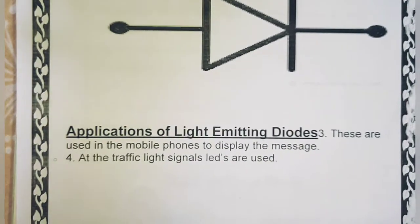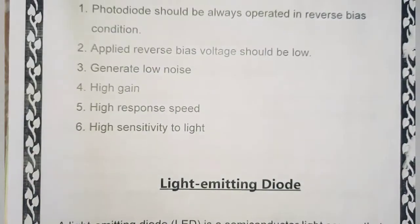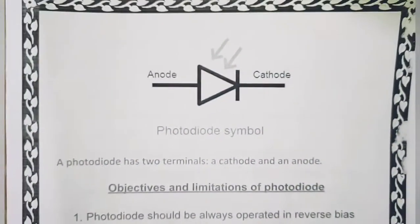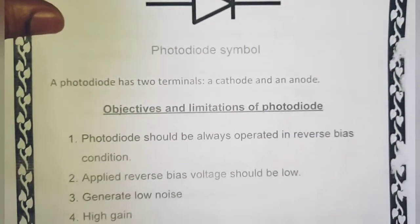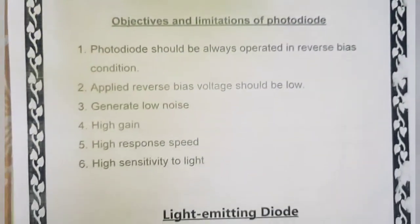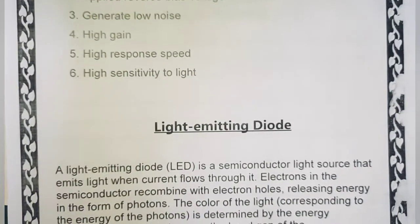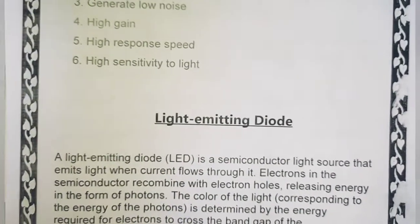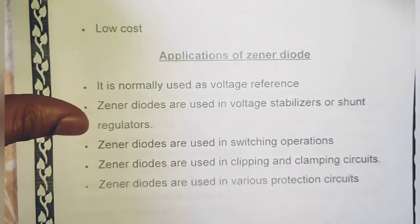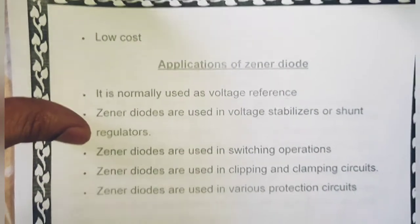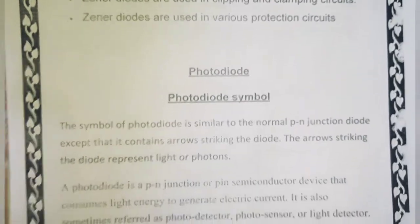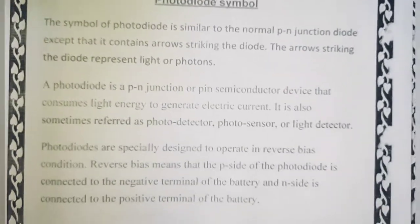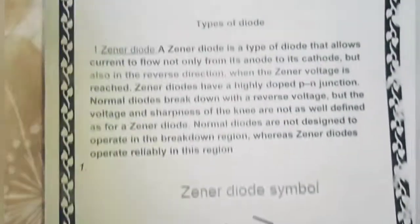LED कहाँ से आ गया? LED का symbol था। Next क्या है — photo diode symbol, objective, limitation of photo diode। LED यानी light emitting diode — इसकी बहुत सारी varieties हैं। Application of diode, photo diode symbol — यह मैं दिखाने की कोशिश कर रहा हूँ।